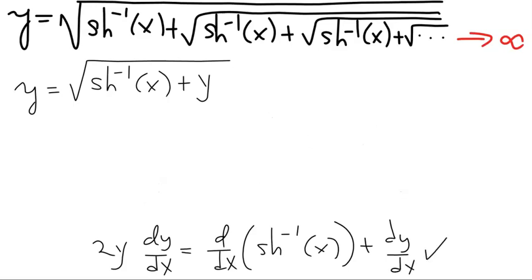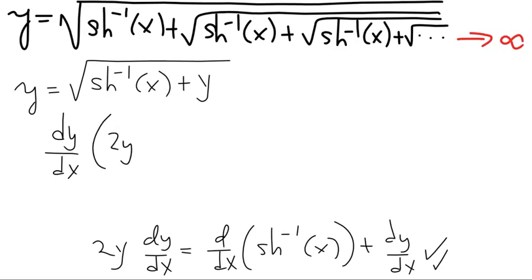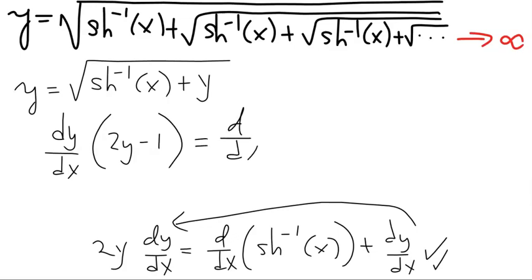The next thing to do is to factor out the dy/dx terms in this equation. Bringing the dy/dx term to the left gives us dy/dx times (2y minus 1), and the right-hand side is d/dx of arc hyperbolic sine of x.